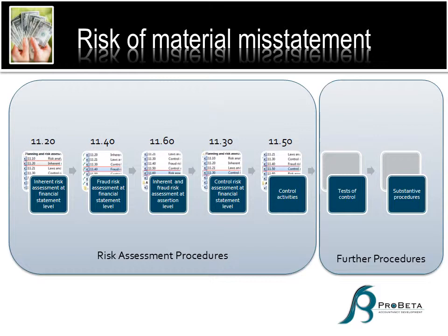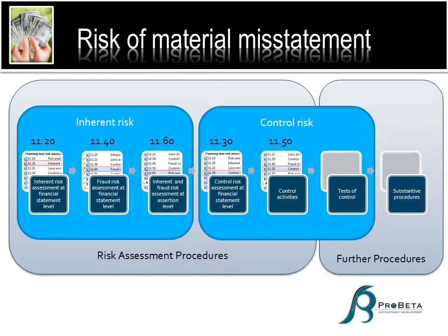Then we look at inherent and fraud risk assessment at assertion level. On 1160, we look at all the assertions, specific materiality, some analytical review, and specifically identified risks, which leads us to the conclusion of inherent and fraud risk assessment at the assertion level. Inherent risk is essentially the first three boxes on that slide — the inherent risk and fraud risk assessment at both overall and assertion level, exactly as the standards require. Control risk is the control side — the control risk assessment at financial statement level and at control activities.